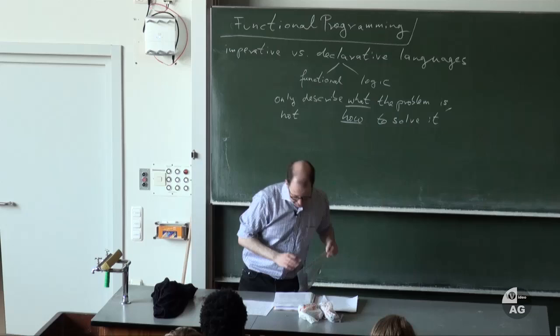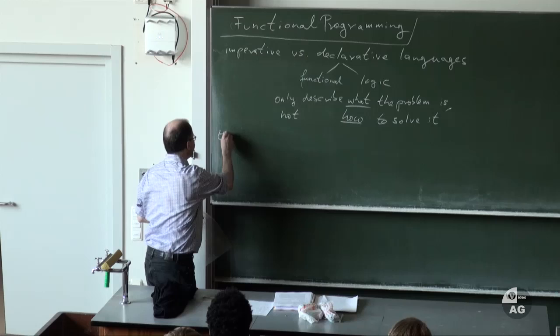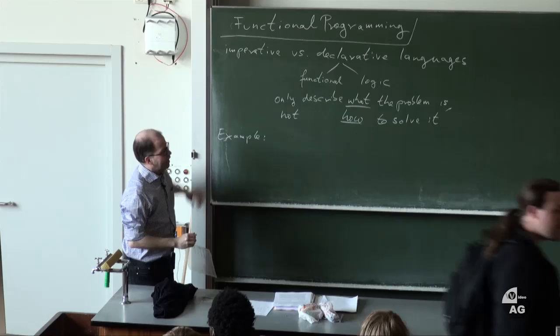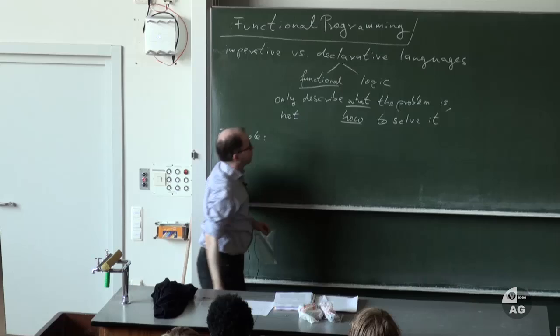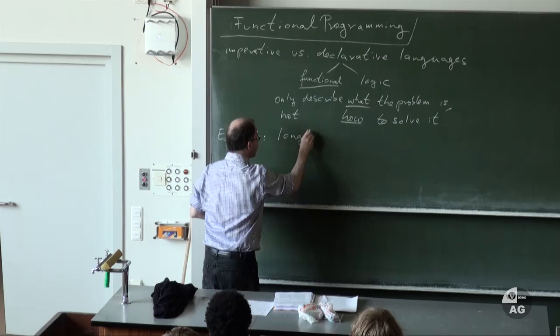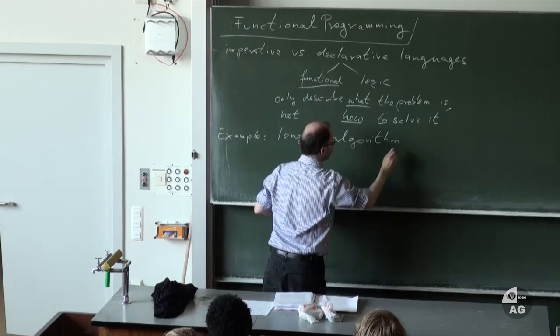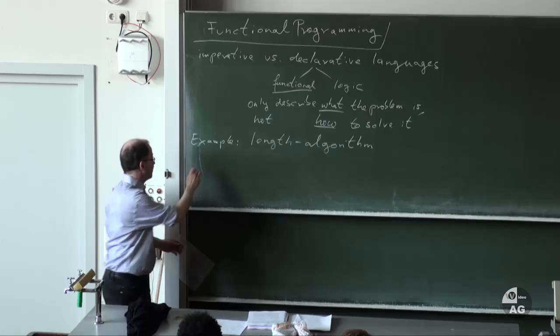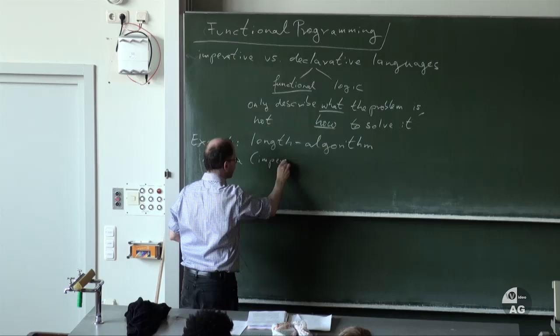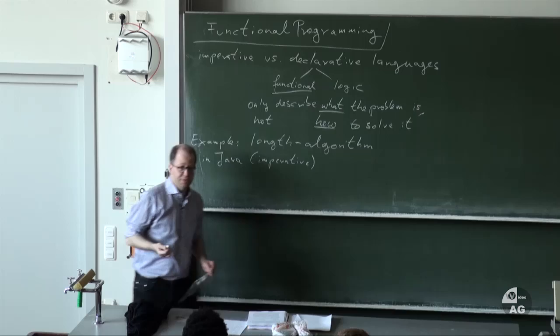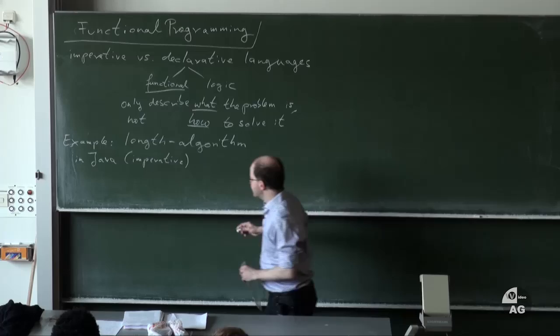To illustrate this with one simple example, let's look at one algorithm and program it in an imperative way and in a declarative way. In this lecture we will look at functional programming, not at logic programming. So let's look at a length algorithm — we will look at it in Java, so in an imperative way, and in Haskell. Haskell is one of the functional programming languages, and that's the language we will consider in this course.